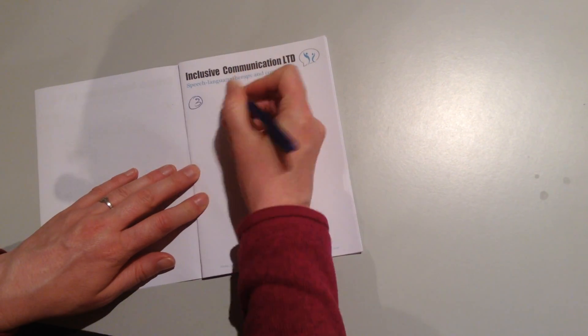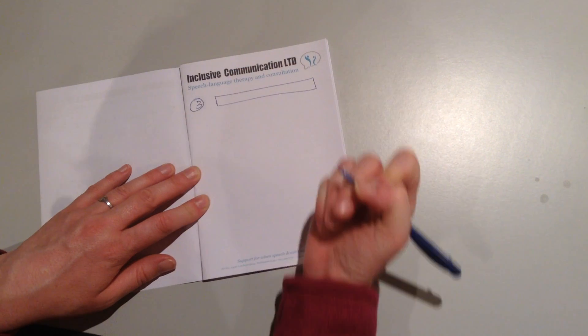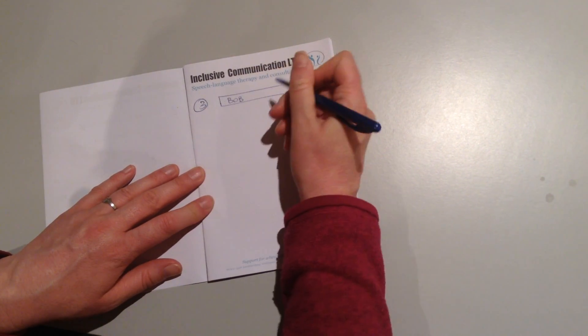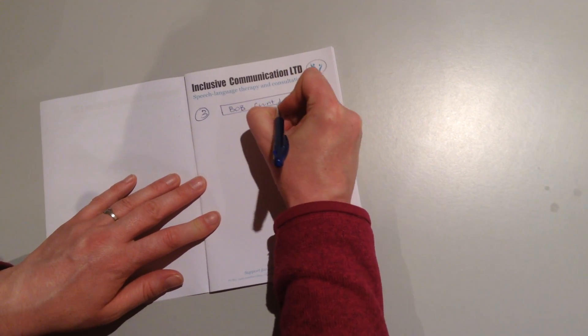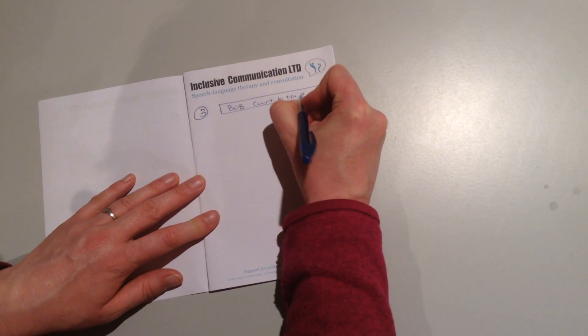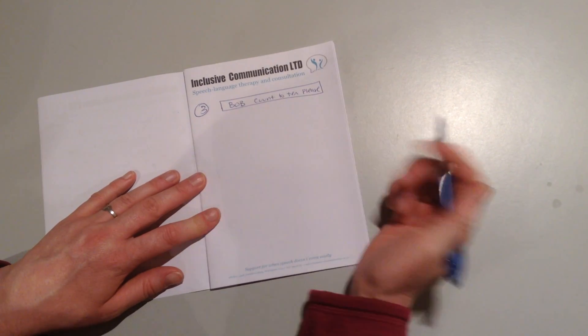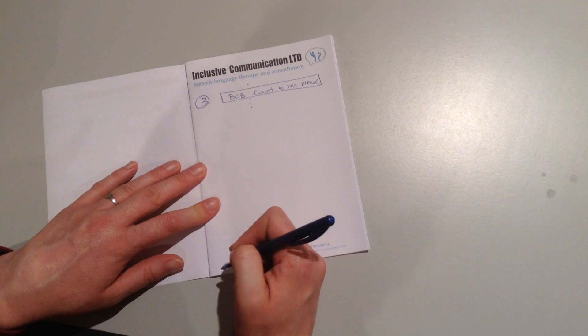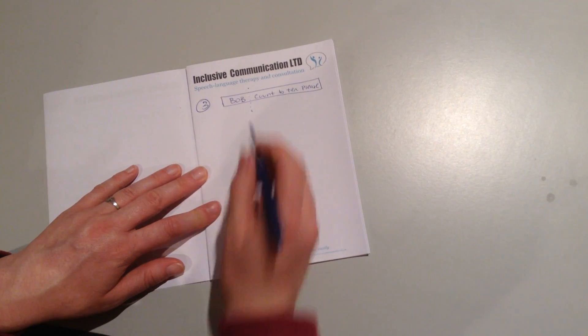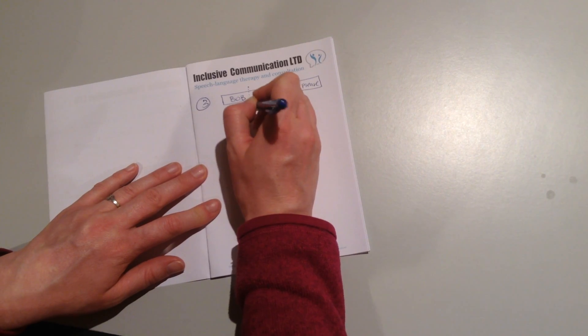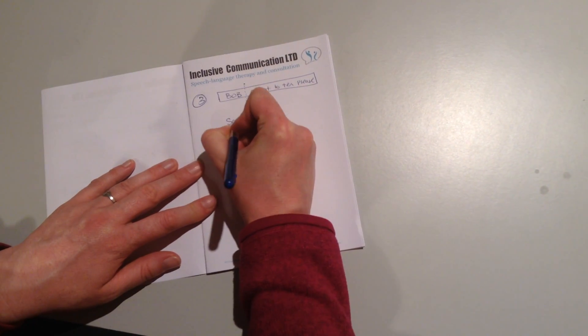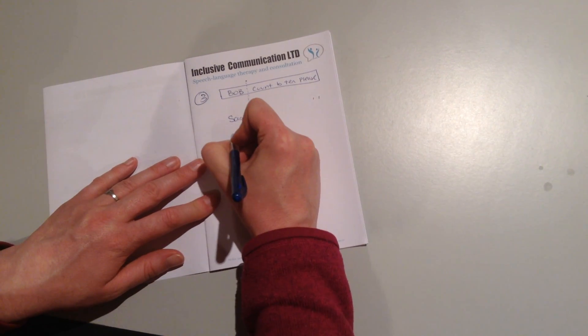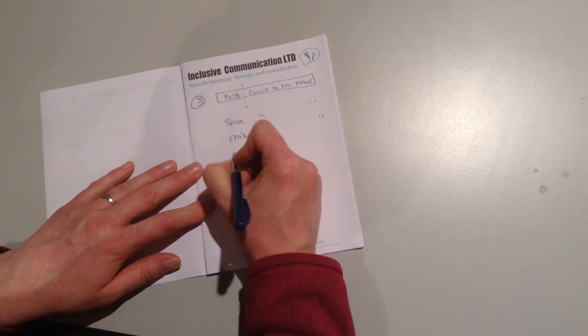Number three, if a language learner is using big chunks, maybe they're saying something like, Bob, count to ten, please. We don't know if they actually know this as individual words, but in the middle of this game of counting to ten during hide and seek or whatever, we're going to show them where that word boundary is. So we're going to say things like, Sarah, count to ten, please. Mike, count to ten, please.